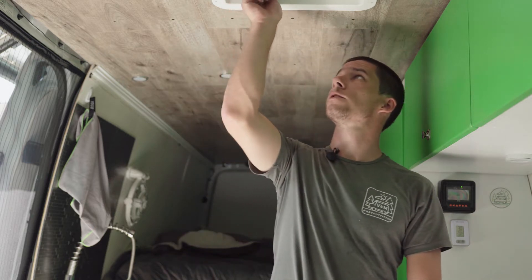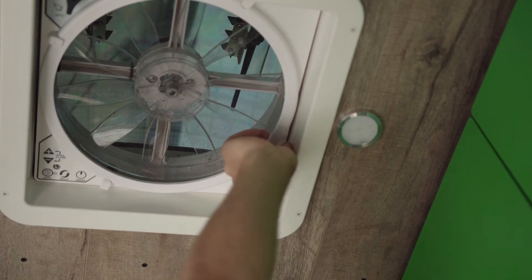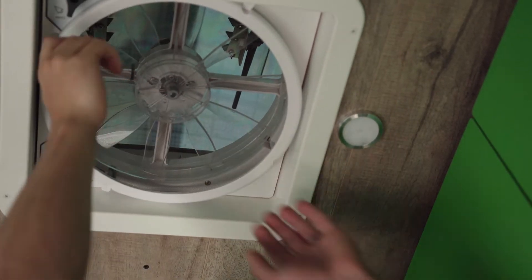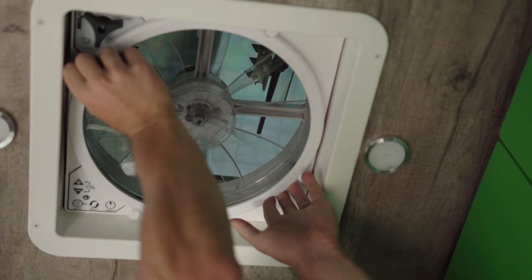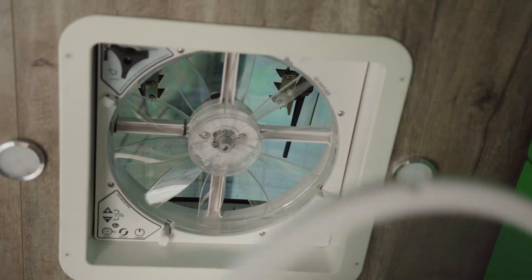First thing we have to do is take off the bug screen. So let's just take your four outside clips, turn them by hand 180 degrees, and then the screen comes right out.